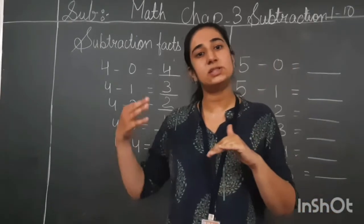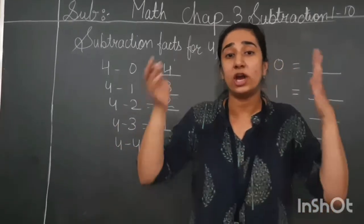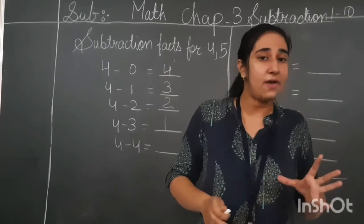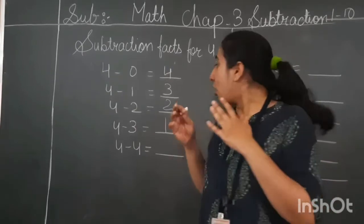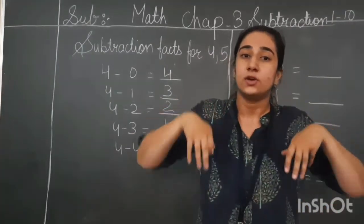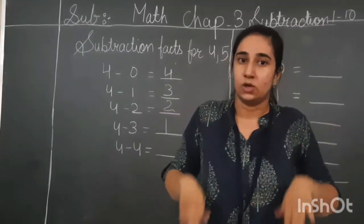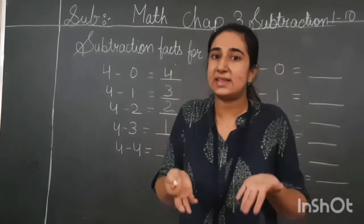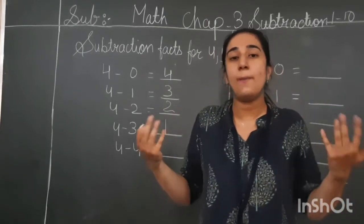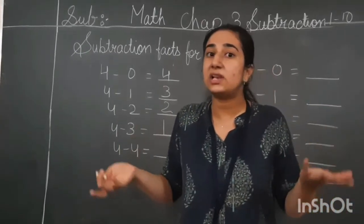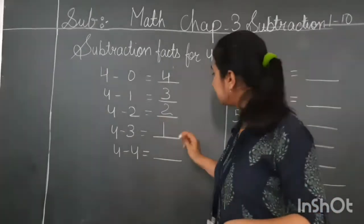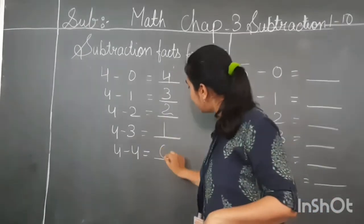Five minus five answer will also be zero. It means you are having four pencils and four pencils you are giving to me — how many pencils will be left with you? None, that means zero.